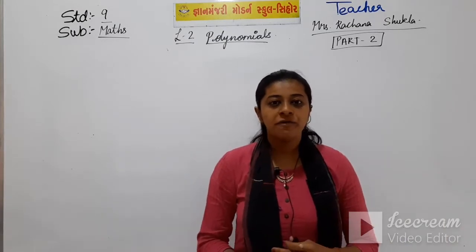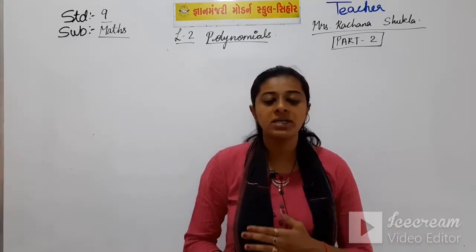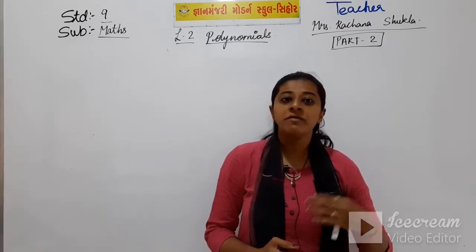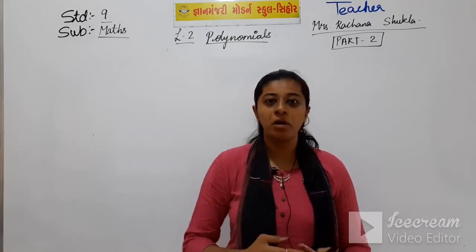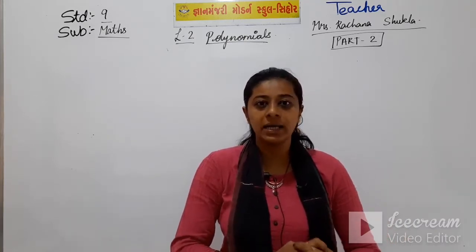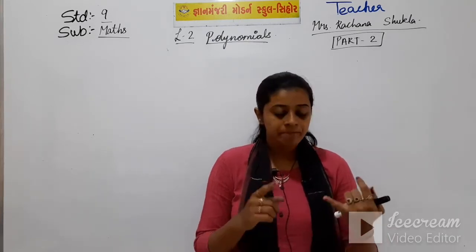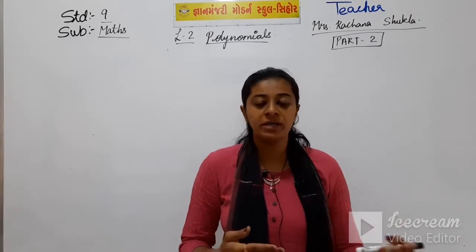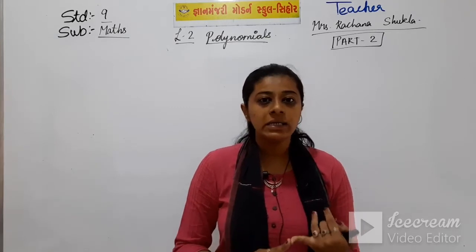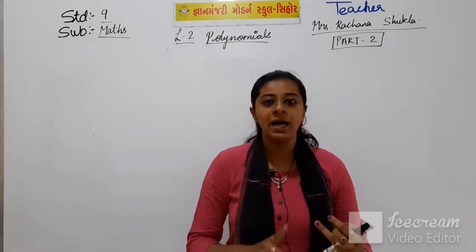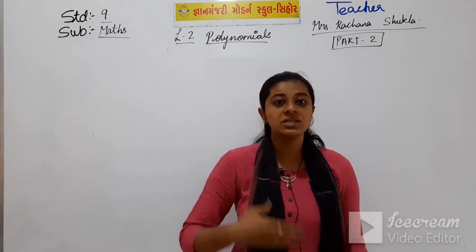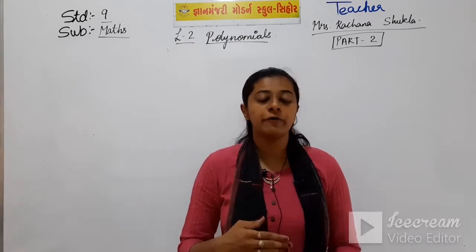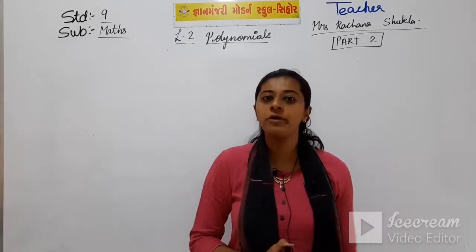In the previous part we learned about what polynomials are, and we saw some algebraic expressions of polynomials. We also saw the different types of polynomials — there are three types: monomial, binomial, and trinomial. Then we saw linear polynomial, quadratic polynomial, and cubic polynomial. We also learned about the degree of the polynomial and the coefficient of a polynomial.